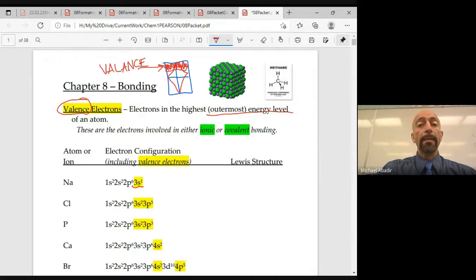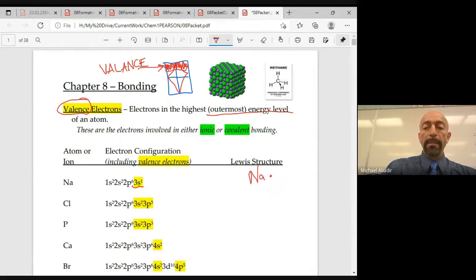For instance, sodium would end in 3s1. That's the highest level, level three, so it has one valence electron. And to draw the Lewis structure for that, you would simply draw the symbol Na and you would draw one dot on the outside. You can draw the dots of any symbol on the left, top, bottom, or right. Those are the four different spots.